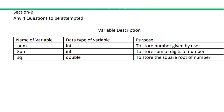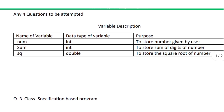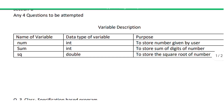For example, a variable with the name 'num' has data type integer, and its purpose is to store the number given by the user. This is how we write the variable description. Variable description is very important from the point of view of your program.